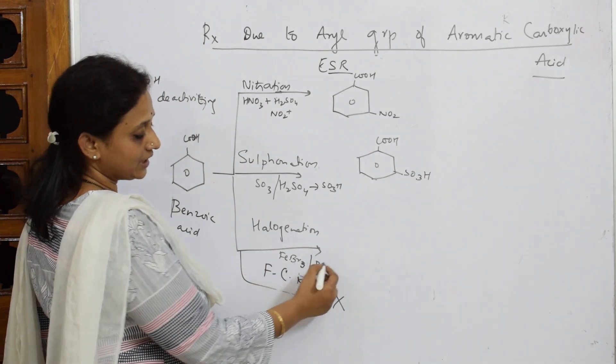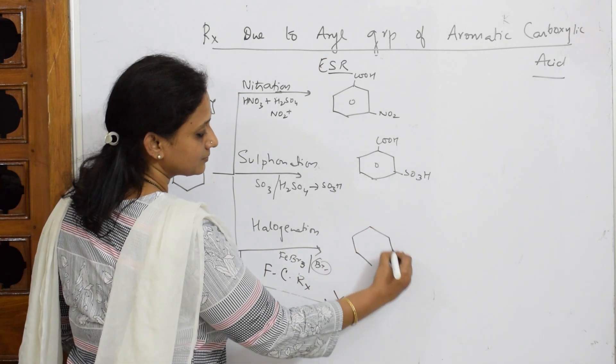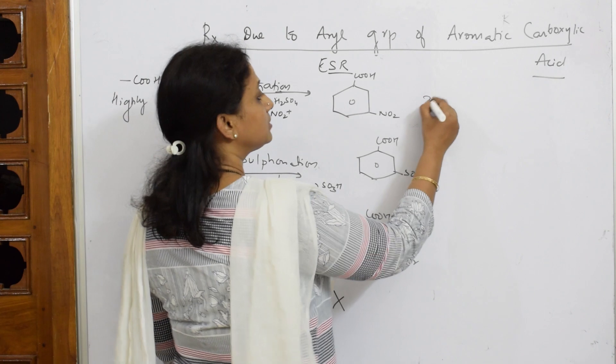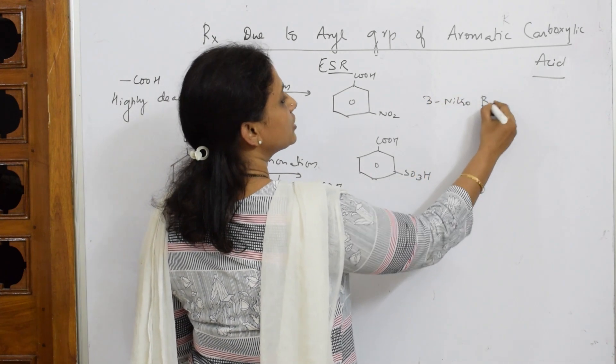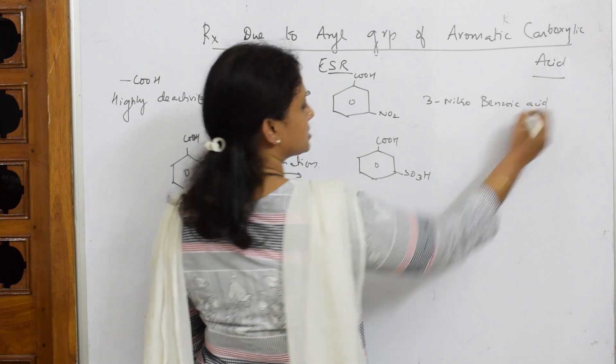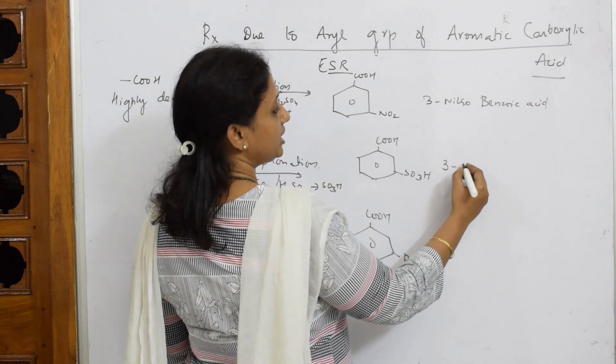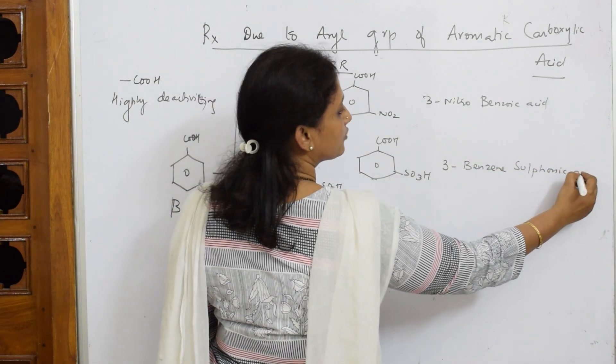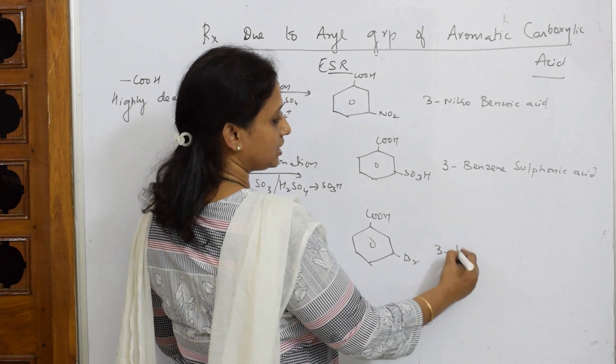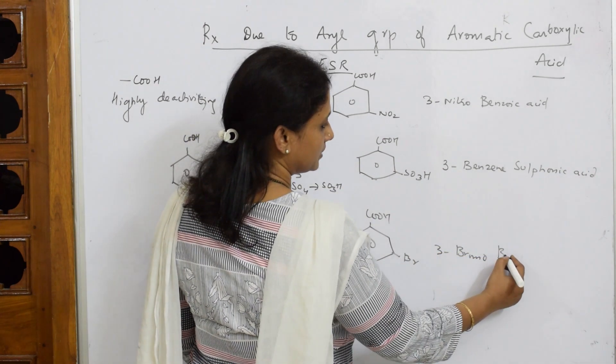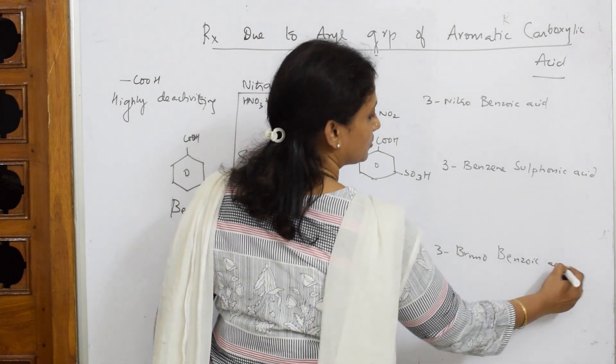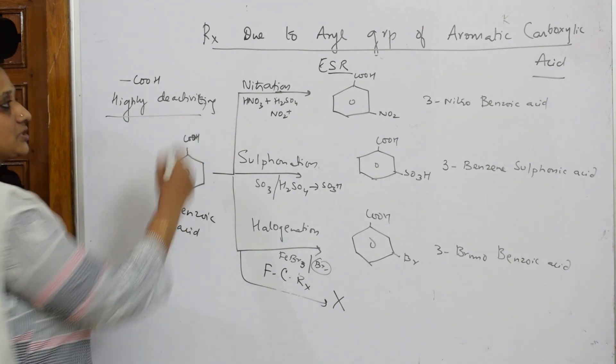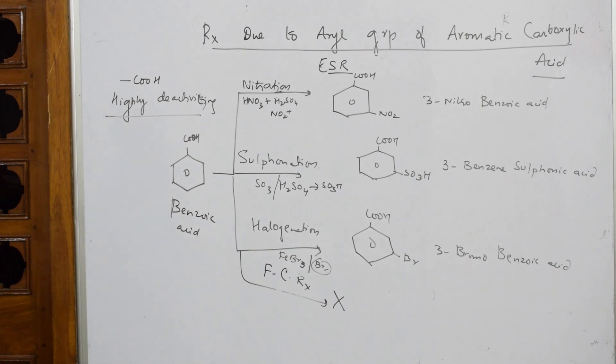The electrophile here is bromine, so you will be getting COOH and bromine. Now name this: 3-nitrobenzoic acid, this is 3-benzenesulfonic acid, and last one 3-bromobenzoic acid. That's it. Only these three important. Doesn't show Friedel-Crafts alkylation, acylation because of deactivating nature.